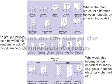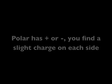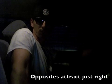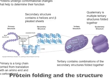Chains on the side — the amino acid R groups interact. Polar groups plus a negative give a slight charge on each side; opposites attract, just right. This happens during tertiary structure. If you get more than one chain together, then you have quaternary structure. All this happens outside the nucleus — protein folding.